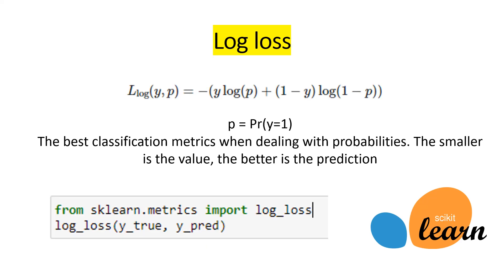We have the log loss, which is the best classification metric when dealing with probabilities. The smaller the value, the better the prediction. In the formula, p represents the probability of the true value equaling one. Log loss is also available in scikit-learn by importing log loss.